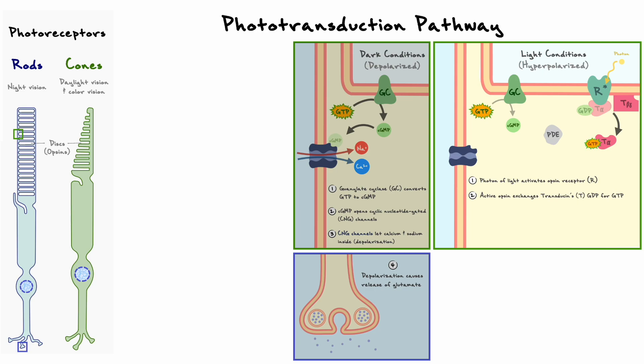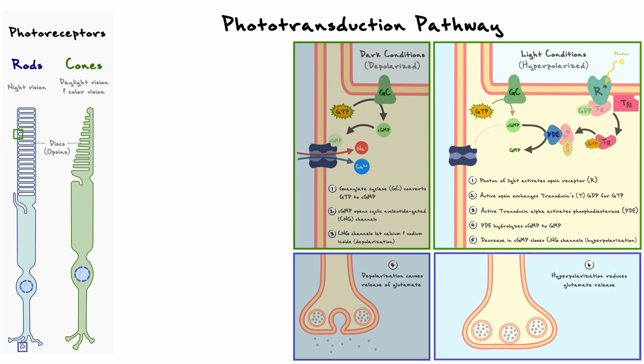This subsequently dissociates the alpha subunit from the beta and gamma subunits, and the now active alpha subunit can activate phosphodiesterase, which is an enzyme that hydrolyzes cyclic GMP into GMP. By depleting the pool of cyclic GMPs, CNG channels stay closed, so light essentially causes the hyperpolarization of the photoreceptor and decreased release of glutamate.